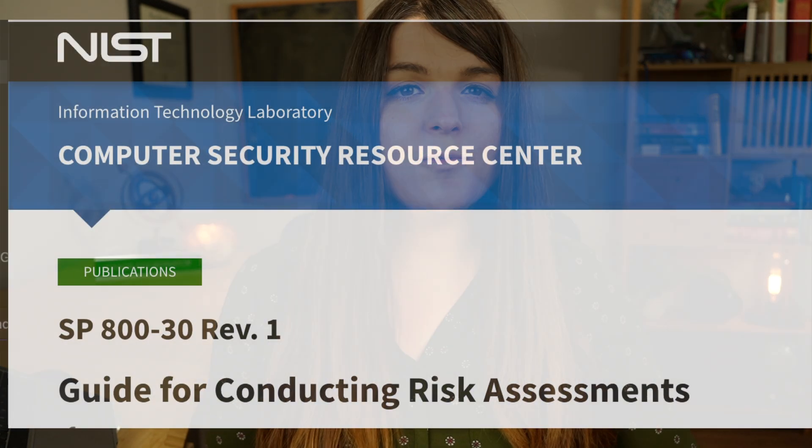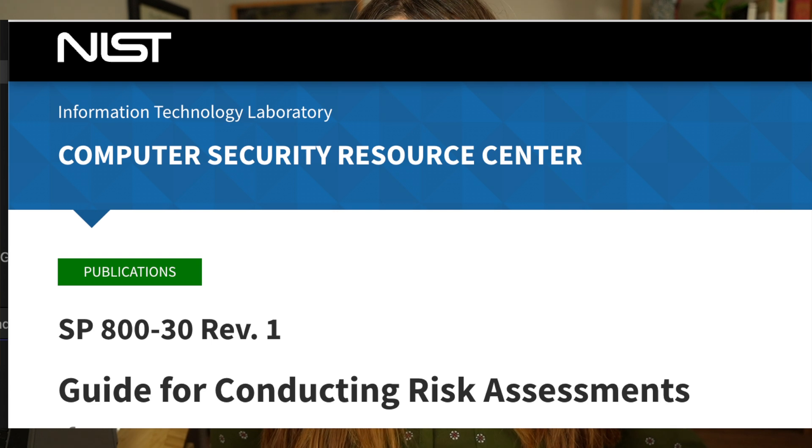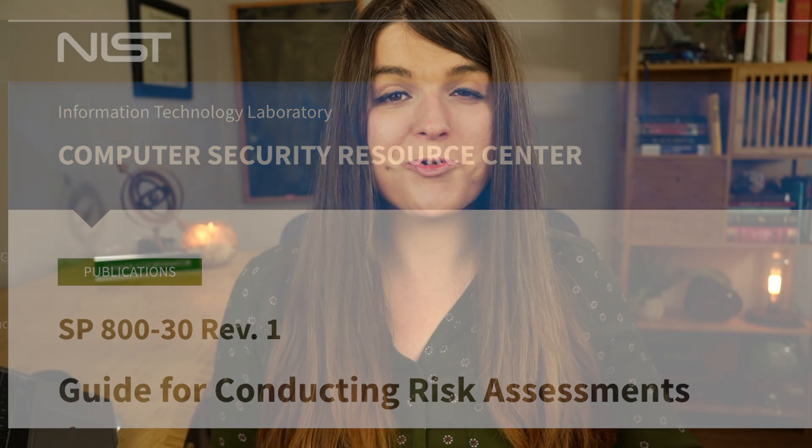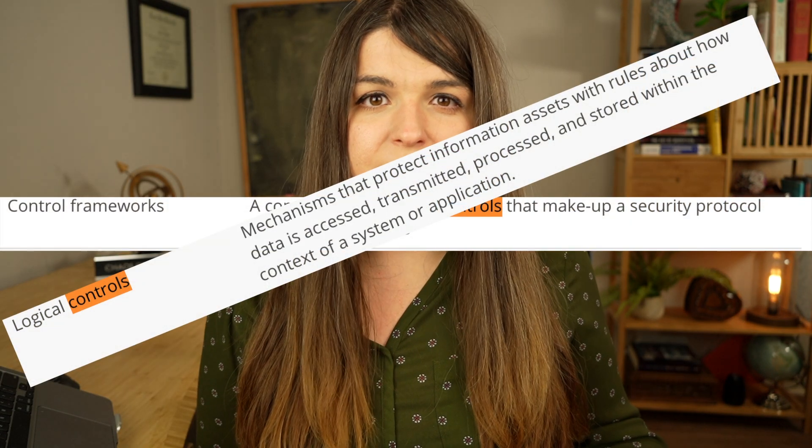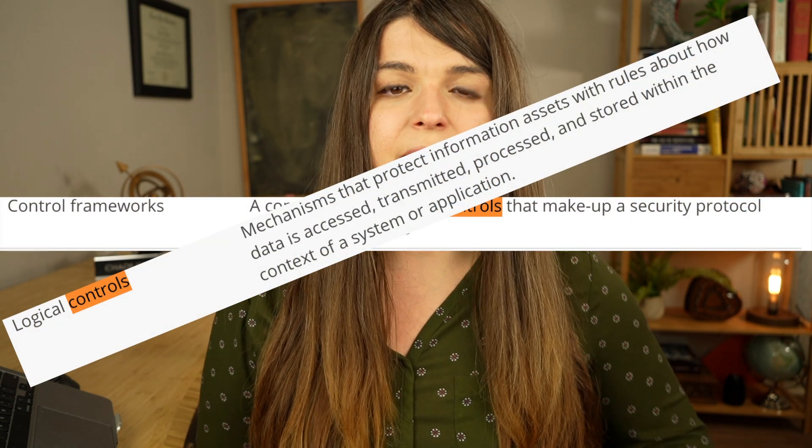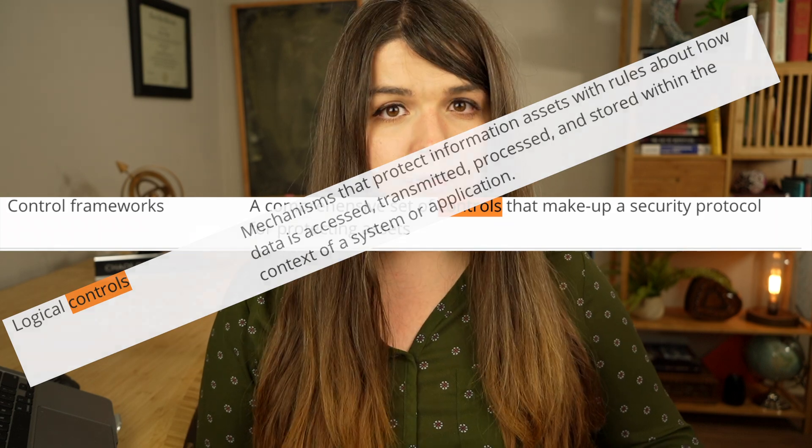It also goes over NIST 800-30, which is why you have a job in the first place. It goes over the CIA triad — confidentiality, integrity, and availability — which are really important concepts. It also covers different administrative, technical, and physical controls.